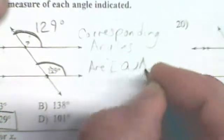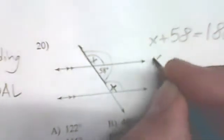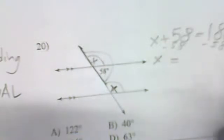Corresponding angles on parallel lines with a transversal are equal. For this next one, put x in the angle. By the corresponding angles theorem this angle equals the other one. Since these two angles are on a straight line they add up to 180, so x plus 58 equals 180. Subtracting 58 gives x equals 122.